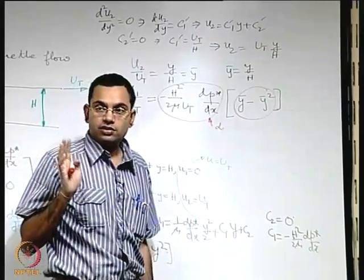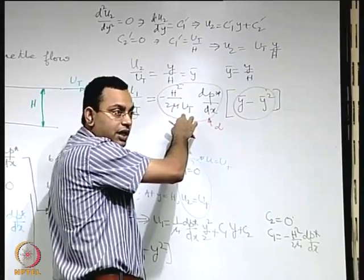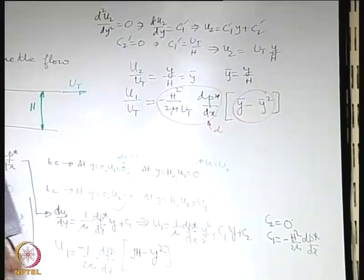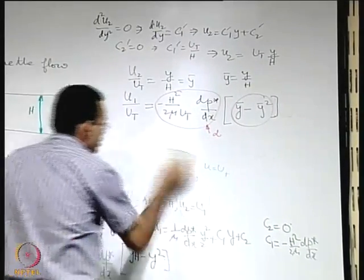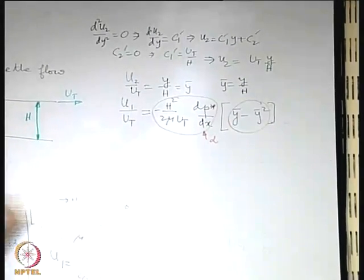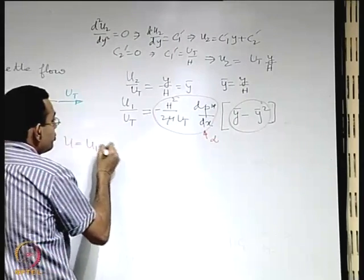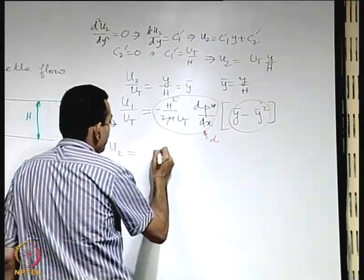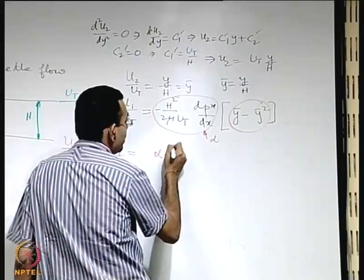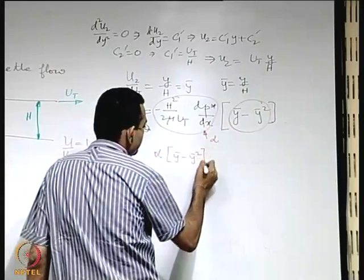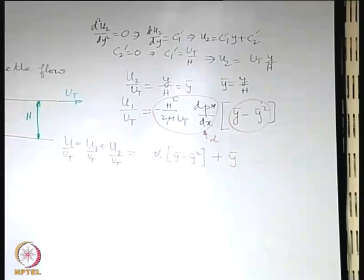With this understanding, the resultant velocity is u/u_t = u1/u_t + u2/u_t = alpha*(ȳ - ȳ²) + ȳ. Alpha may be positive or negative. When u_t = 0, to drive flow in the positive x direction you need dp*/dx negative (favorable pressure gradient). When u_t is positive, even with positive dp*/dx (adverse), the flow may still be maintained in the positive direction if the plate effect dominates.